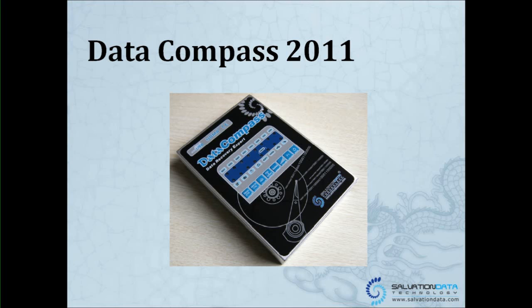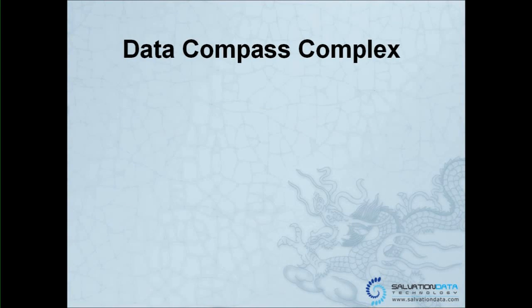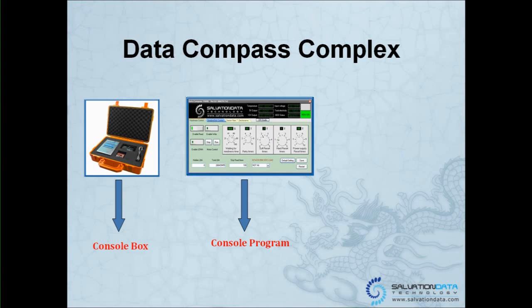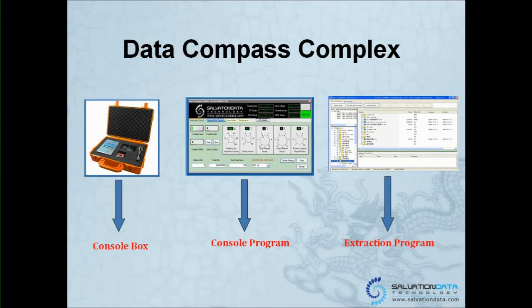This is a DataCampus box which is the console. The DataCampus complex is made of three parts. One is the console box. The second one is the software which is the control panel. And the extraction program for you to actually do the recovery. The hardware function is responsible for reading data from the source drive and imaging data using the ShadowDisk function. The console program is designed for hardware control, and its parameters are automatically set when reading the LCD. The extraction program is designed for quick search of your hard drive's file system and to do recovery.